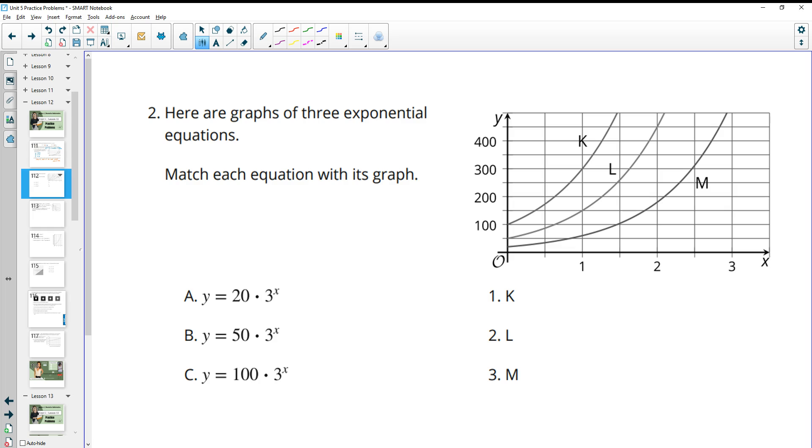Number two wants us to match some graphs again. In this one, you can kind of see by the options that they all actually have the same growth factor. So the steepness or how quickly they grow is not a distinguishing feature.